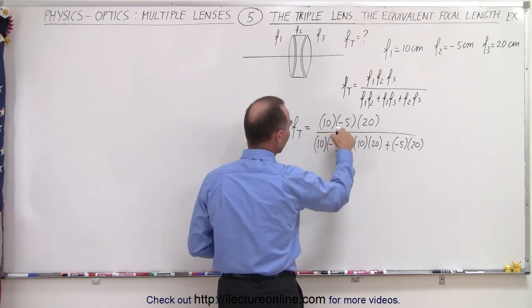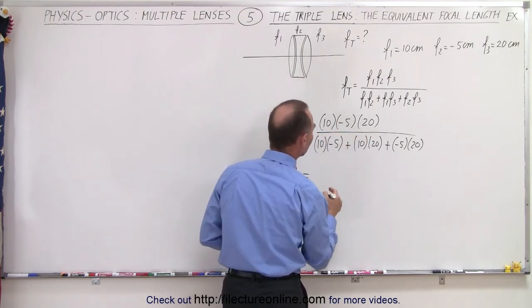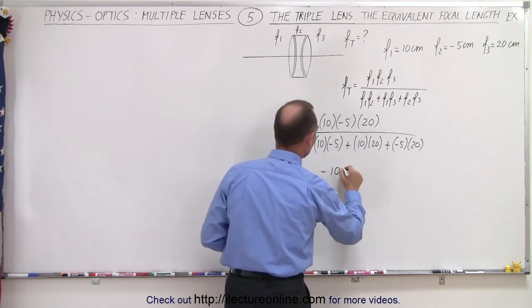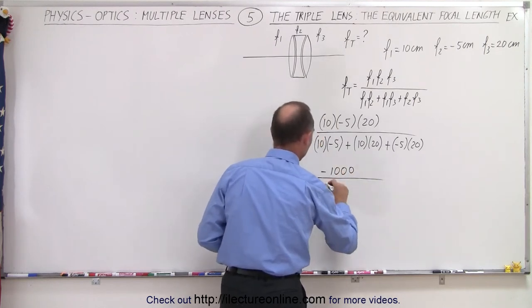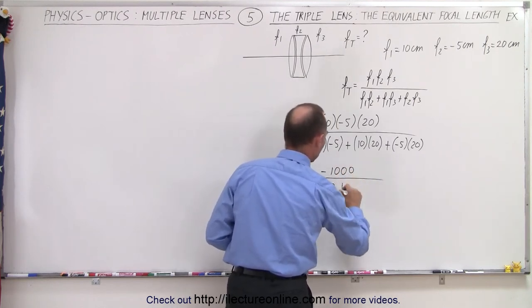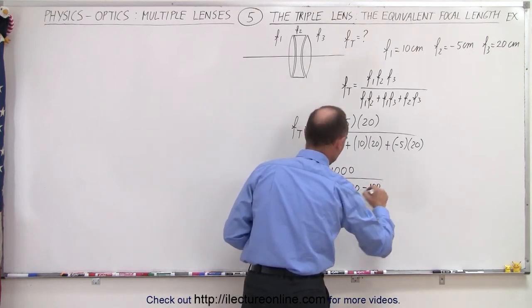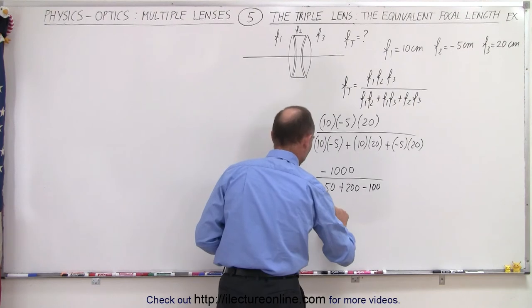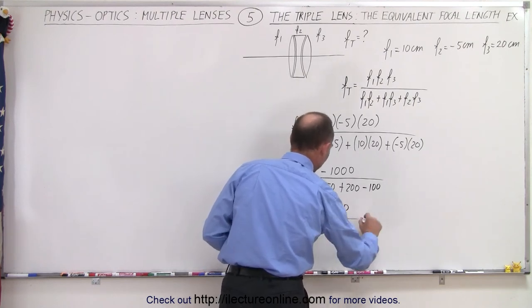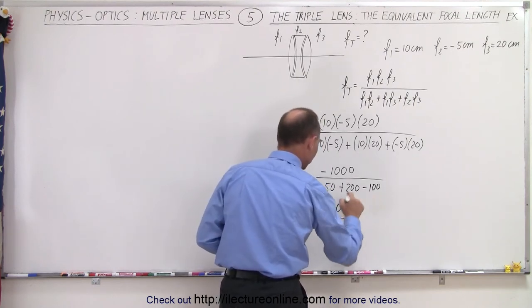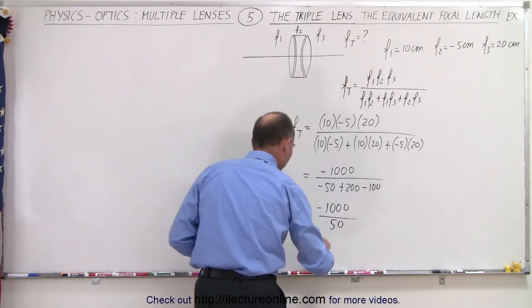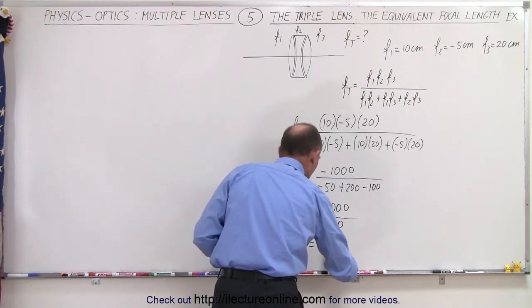So this gives us 50 times 20, that's 1000, that would be minus 1000 in the numerator, divided by that would be minus 50 plus 200 and minus 100, so that would be equal to minus 1000 divided by minus 150 plus 200, that would be plus 50, and so that would be equal to minus 20.